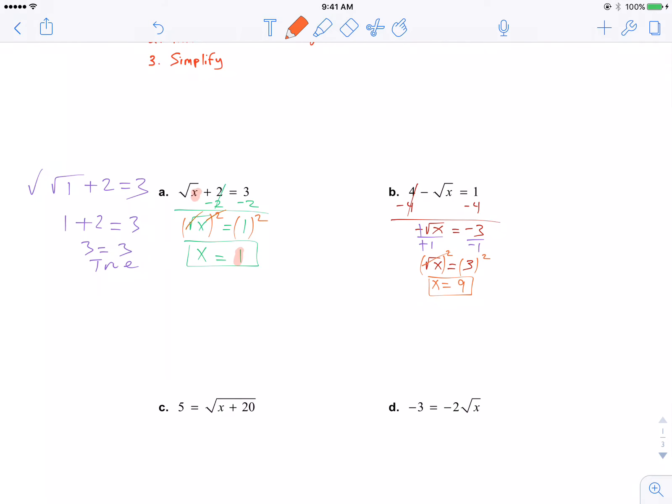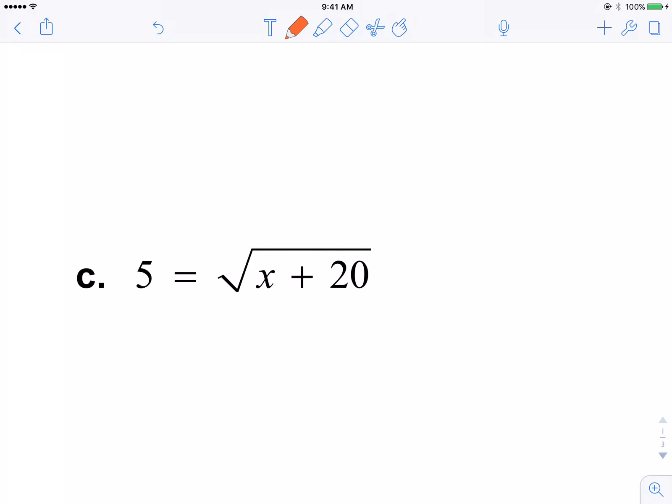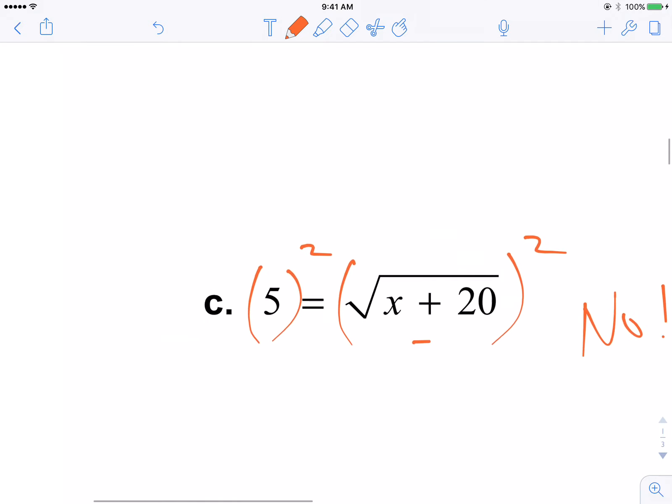So here, this is a little unique in that when you take a look, the 20 cannot be subtracted. It's under the radical. It's trapped. You cannot subtract 20. I don't want to see this. This is no. Watch. No. Do not do this.